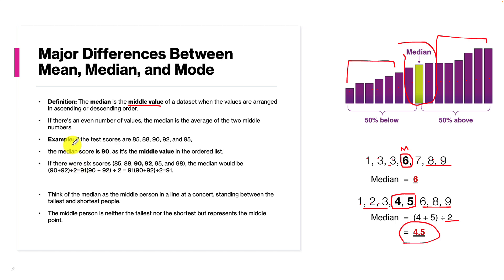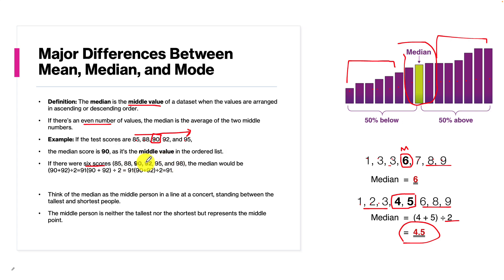Looking at test scores 85, 88, 90, 92, 95 in ascending order — with five numbers, the median is right in the center at 90, with two values on each side. But if I have six scores, I identify the two central scores — 90 and 92 — add them together, divide by two, and get a median of 91. So my median average of this data set is 91.